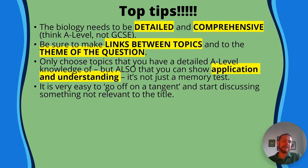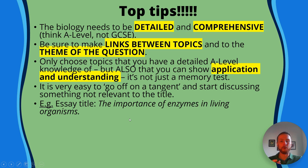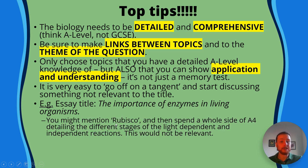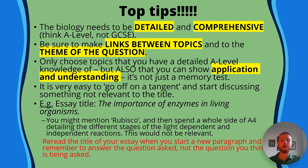It's very easy to go off on a tangent — for example, if the question is about transfer of energy, don't detail every step of aerobic and anaerobic respiration. Keep it to things like chemical energy, how ATP is used as a short-term energy storage molecule, and glycogen as a store. For instance, if the essay title is 'the importance of enzymes in living organisms', you might mention Rubisco, but don't spend a whole side of A4 detailing the light-dependent and independent reactions. Stick to the key enzymes and give a lot of detail about Rubisco specifically. Re-read the title when you start a new paragraph and be specific to the question.